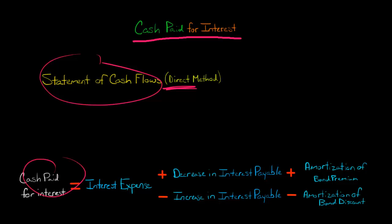Cash paid for interest is going to be equal to the amount of interest expense the company had for the period, and you're going to get that from the company's income statement. But then you're going to have to make a change based on what happened to the company's interest payable over the prior period.